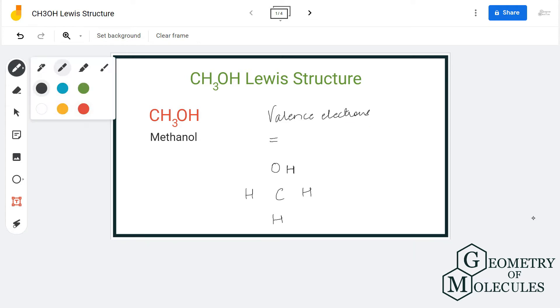Carbon has four valence electrons, each hydrogen has one valence electron, and the OH group has seven valence electrons. So in total, we have 14 valence electrons for this molecule.